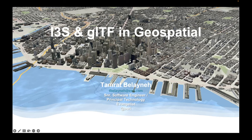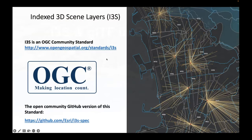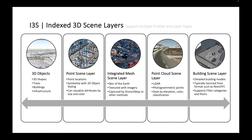Today I'll talk about I3S and GLTF in a geospatial context. As Sean and Michael mentioned, there are different ways to stream massive amounts of geospatial content to the web and desktop applications — I3S is one of those formats. Index 3D Scene Layer is an OGC community standard that allows you to stream massive amounts of geospatial data for web, desktop, and runtime applications. I3S supports five different layer types: 3D objects, point scene layer, integrated mesh, point cloud scene layer, and building scene layer, which was adopted by OGC at the end of last year.